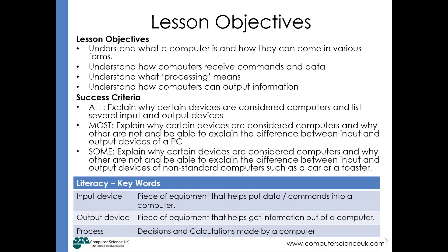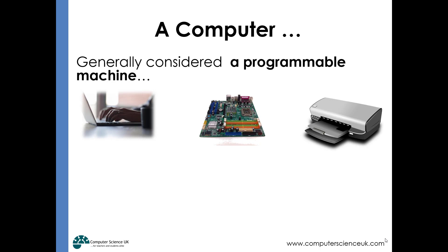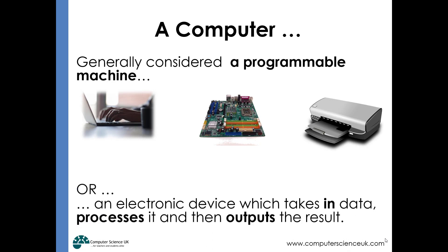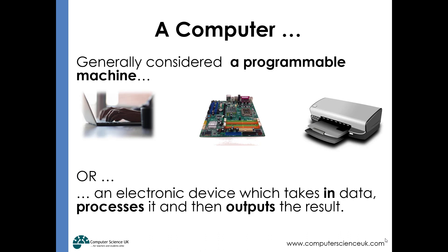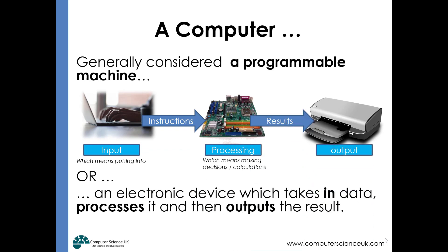In terms of what a computer is, here are a couple of definitions we need to understand. Computers are generally considered programmable machines. Another way of looking at it is that they are electronic devices which take in data, process the data, and then produce outputs as a result. So they take in an input, process these inputs, and produce some sort of output.